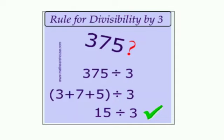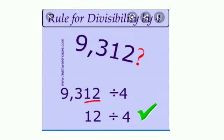Rules for divisibility by 3. Example: 375. We add the digits: 3 plus 7 plus 5. 3 plus 7 is 10, and 10 plus 5 is 15. 15 is divisible by 3, so 375 is also divisible by 3.